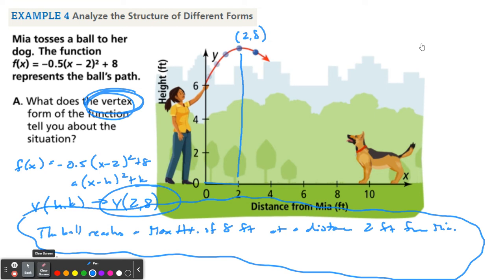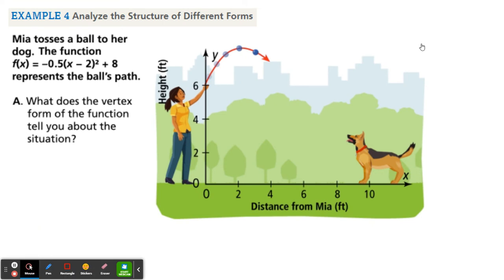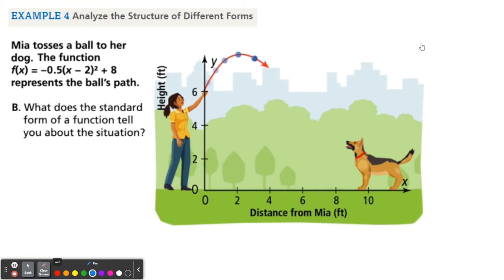Okay, so now, question part B says, what would the standard form of a function tell us? Well, we're going to take this function, and we're going to write it in standard form. Okay, this is going to take a little bit of steps, so watch. Alright, so first thing is, we need to expand this x minus 2 squared.